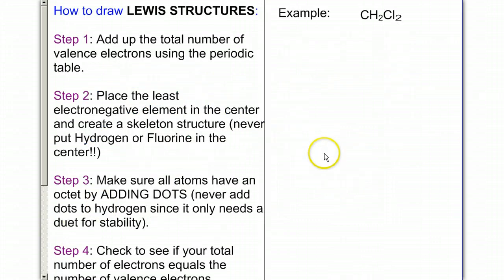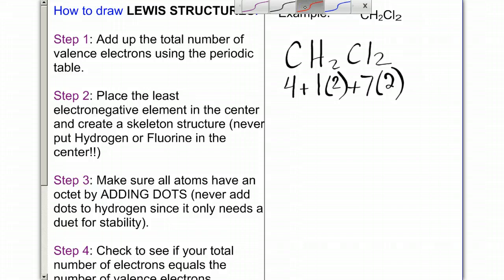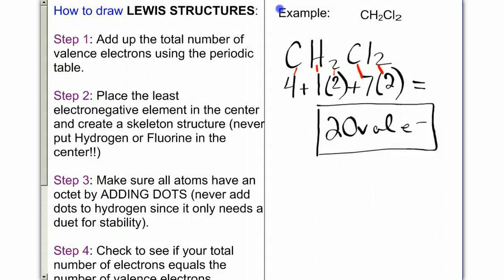So let's talk about the rules of how to draw a Lewis structure, and I'll do one example step by step. Here's step one. We're going to add up the total number of valence electrons using a periodic table. So here's my example. And what we do is we look at what group number the element is located in. So CH2Cl2. Carbon is in group 4, so it has 4 valence, plus hydrogen is in group 1. Because there's a 2 next to it, I'm going to multiply by 2. And then chlorine has 7 valence, and then there are 2 chlorines, so I'm going to multiply that by 2 as well. This is going to give me a total number of valence. This gives me 20 valence electrons. So my goal is going to be to draw a structure that has 20 electrons total.